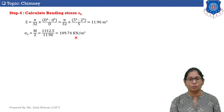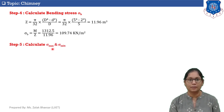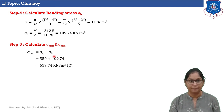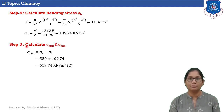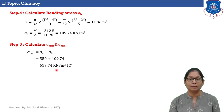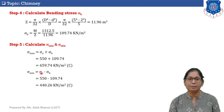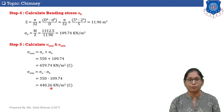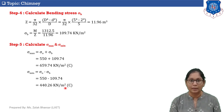Step number five: calculate sigma maximum and sigma minimum. Sigma maximum equals sigma zero plus sigma b, which is 550 plus 109.74, giving sigma maximum equals 659.74 kN/m². This positive value indicates sigma maximum is compressive in nature. Sigma minimum equals sigma zero minus sigma b, which is 550 minus 109.74, giving sigma minimum equals 440.26 kN/m². Again the positive value indicates sigma minimum is also compressive in nature.